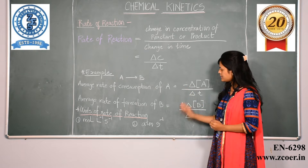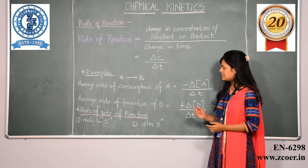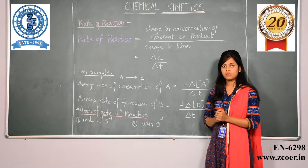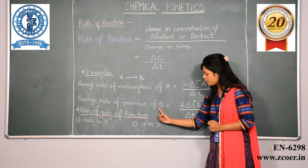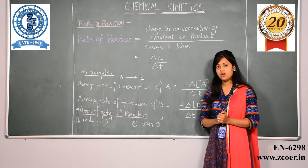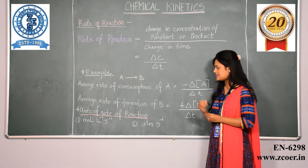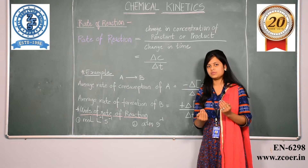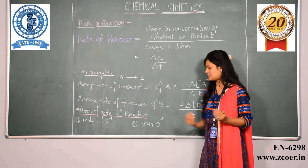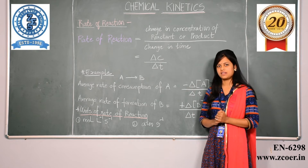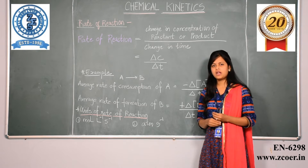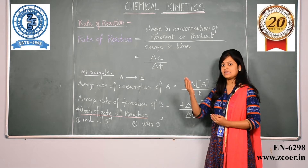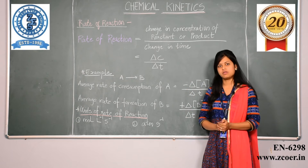One important difference we can see here is that for the rate of consumption of A there is a negative sign, whereas for the rate of formation of B there is a positive sign. This is because the reactants are going to be consumed and their concentration is going to decrease, while the products are going to be formed and their concentration is going to increase.